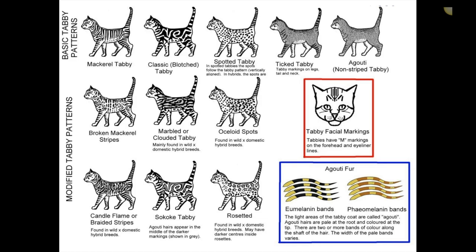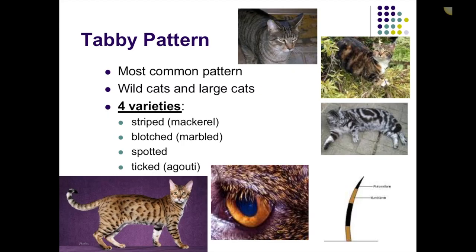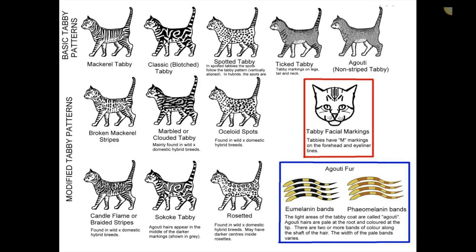Looking at a picture of the modified tabby patterns: focusing on the mackerel tabby, the classic or blotched tabby, spotted tabby, and ticked tabby — those are the four main varieties. The sub-classifications include the agouti, which is a non-striped tabby and a form of ticked tabby. We've also got broken mackerel stripes, marbled or clouded tabby, oceloid spots, candle flame or braided stripes, Sokokese tabby, and rosetted tabby.